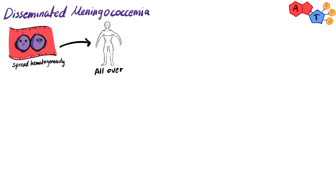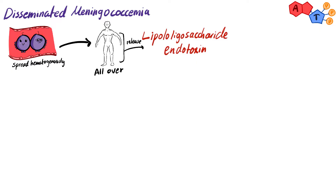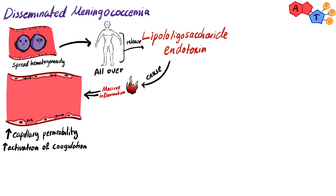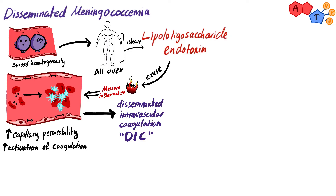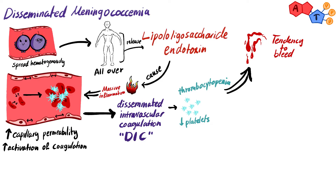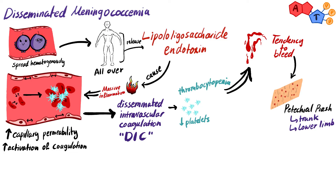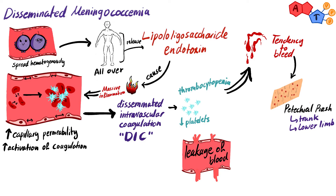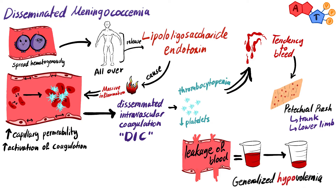For disseminated meningococcemia, when Neisseria meningitidis spreads through the blood, it releases the endotoxin lipo-oligosaccharide, resulting in a massive inflammatory response with increased capillary permeability and activation of coagulation. Extensive coagulation inside blood vessels throughout the body is called disseminated intravascular coagulation (DIC). This consumes the platelets, causing thrombocytopenia, which increases bleeding tendency and presents as petechial rash especially over the trunk and lower extremities. Endothelial damage and increased capillary permeability lead to blood leakage into the interstitial space, causing generalized hypovolemia — hypovolemic shock.